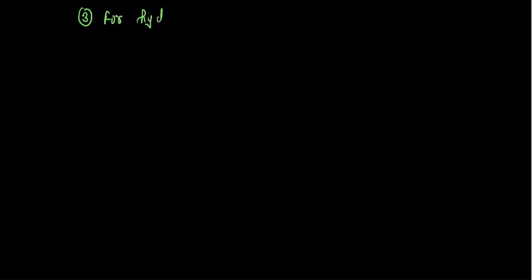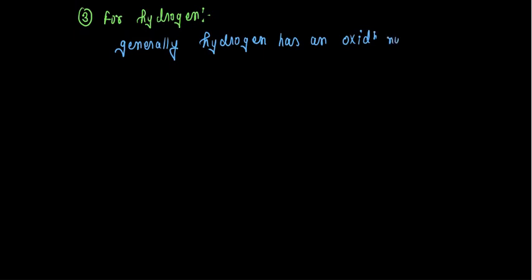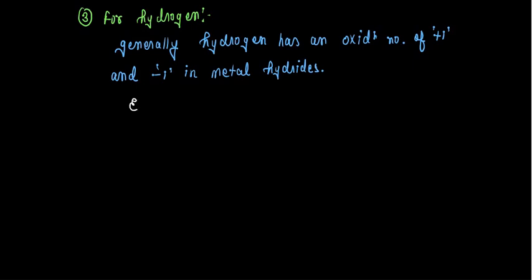Next, for hydrogen: generally hydrogen has an oxidation number of plus 1, but minus 1 in metal hydrides. For example, in HCl (a type of acid), hydrogen has an oxidation number of plus 1. But in a metal hydride like NaH (sodium hydride), Na is plus 1 and hydrogen is negative 1.